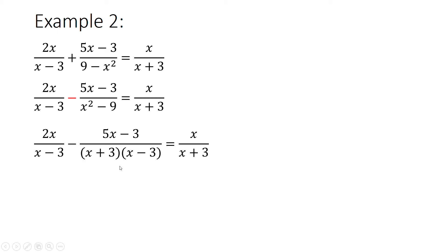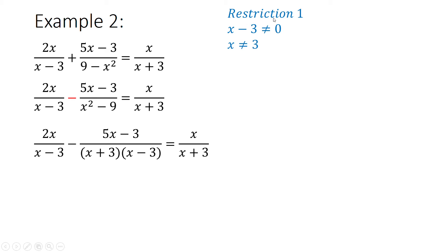From there, I need to do my restriction for every single aspect of the denominator that has a variable. There are two different parts of this LCD: the x minus 3 part and the x plus 3 part, so I need to do a restriction for both. Restriction 1: x minus 3 can't be equal to 0, so x can't be equal to 3 — because 3 minus 3 equals 0. Restriction 2: x plus 3 can't be equal to 0, so x can't be equal to negative 3.